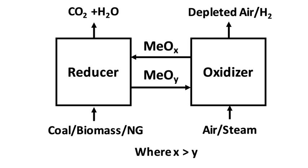First operation of chemical looping combustion with gaseous fuels was demonstrated in 2003, and later with solid fuels in 2006. Total operational experience in 34 pilots of 0.3 to 3 MW is more than 9000 hours. Oxygen carrier materials used in operation include monometallic oxides of nickel, copper, manganese and iron, as well as various combined oxides including manganese oxides combined with calcium, iron and silica. Natural ores have also been in use, especially for solid fuels, including iron ores, manganese ores and ilmenite.